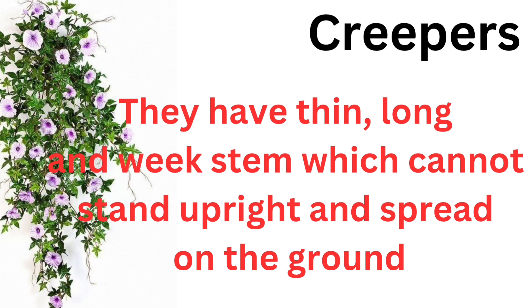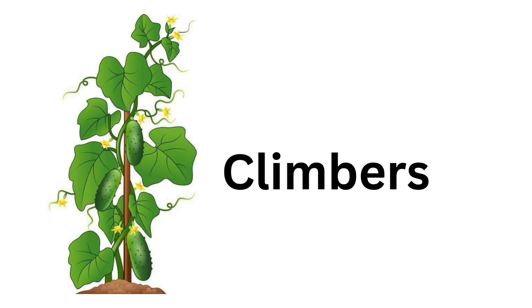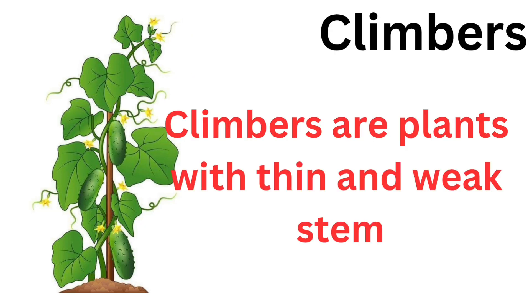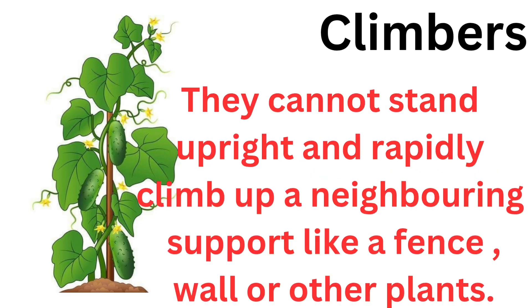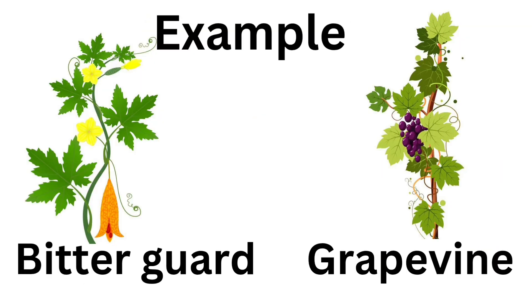Creepers grow on the ground; examples of creepers are pumpkin and watermelon. Climbers are plants with thin and weak stems. They cannot stand upright and rapidly climb up a neighboring support like a fence, wall, or other plants. The tendrils of the plant wind themselves around any object and help the plant to climb up. Common climbers include bitter gourd and grapevine.